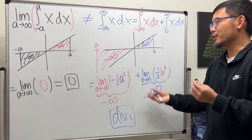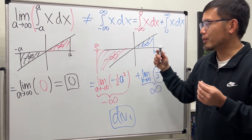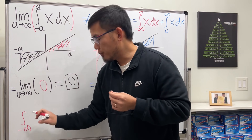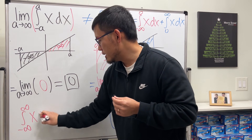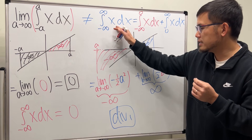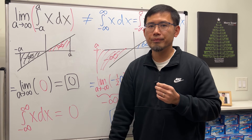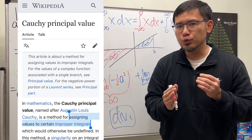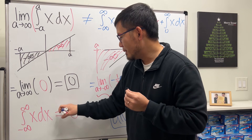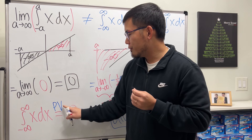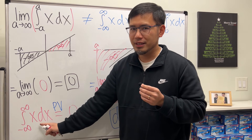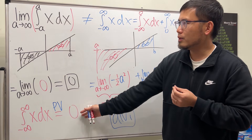Is there any connection between the two? Yes — the Cauchy Principal Value. If you want to say the integral from negative infinity to infinity of x dx equals zero, that's wrong as stated since it diverges. However, we can assign a value to divergent integrals using the Cauchy Principal Value. Write PV above the equal sign: the principal value of this integral equals zero, assigned by using the symmetric inside-out approach.